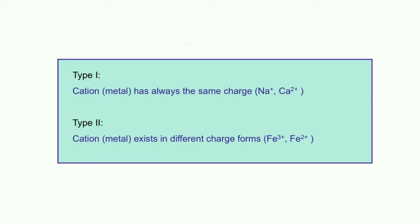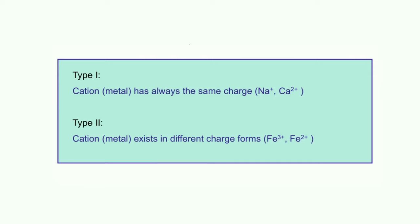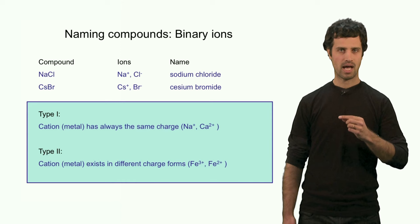Type 1 cations are those that can only have one charge. Type 2 are those cations that can have a variable charge. So, let us start with looking at binary ionic compounds that have a Type 1 cation.